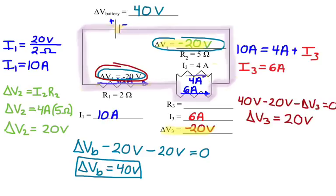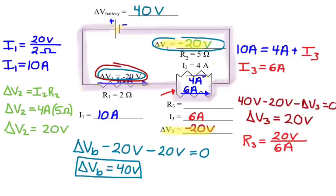That will always be true when two resistors are directly in parallel with each other — we call that a parallel circuit. If there had been another resistor in series in one of those branches, the voltages would not be equal. But around any closed loop, voltage must still add up to zero. Finally, using Ohm's Law: R3 = 20 volts / 6 amps ≈ 3.33 ohms.